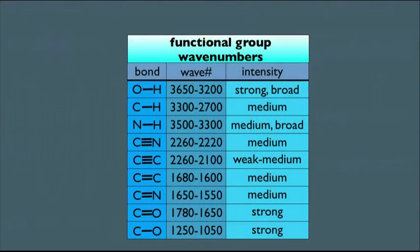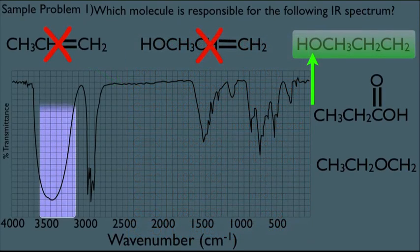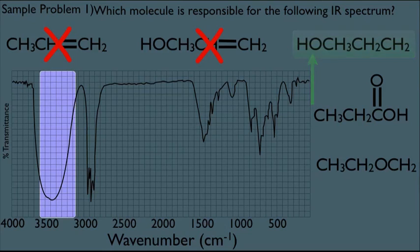Let's go back to our wavenumber chart. OHs, they're very obvious here. They are very strong and broad, and they peak roughly from 3200 to 3650. So going back here, notice that's this region right here. We definitely have a strong, broad peak. So you can't rule out this molecule. We're going to leave him here.